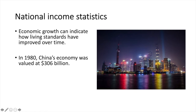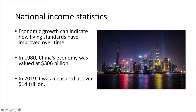A great example often given in economics classes is that of China in the 1980s versus China today. In 1980, China's economy was valued at US$306 billion. In 2019 it was measured at over US$14 trillion. In 1981, 81% of the country's population was in absolute poverty.